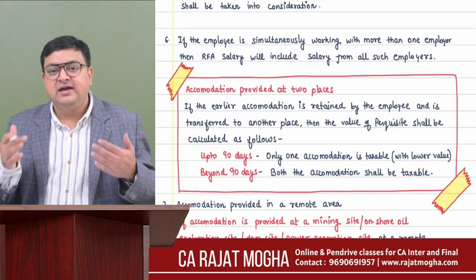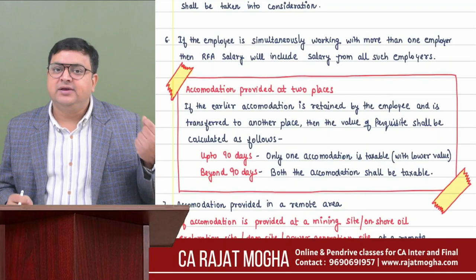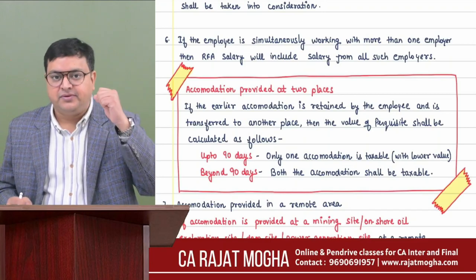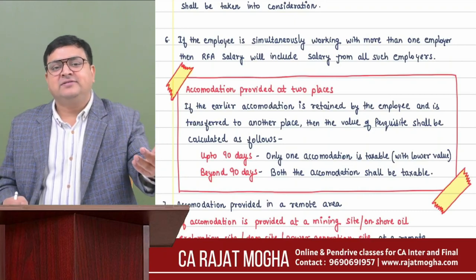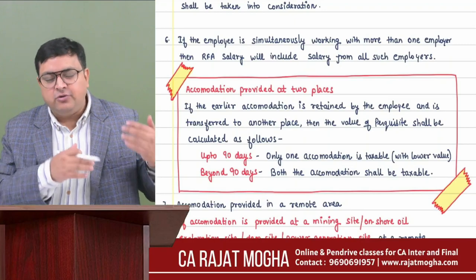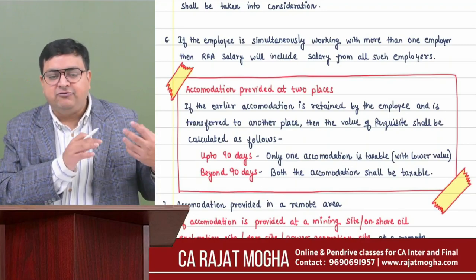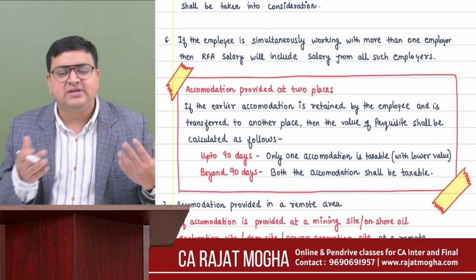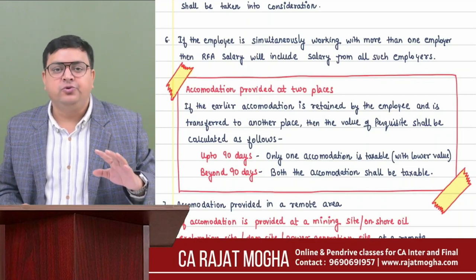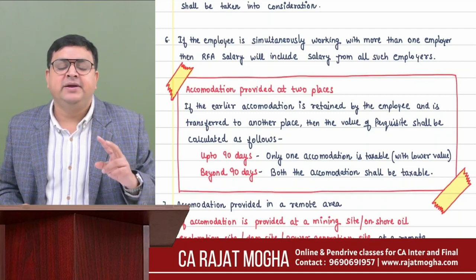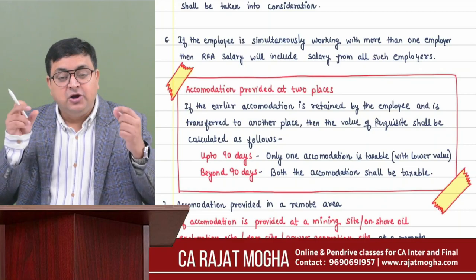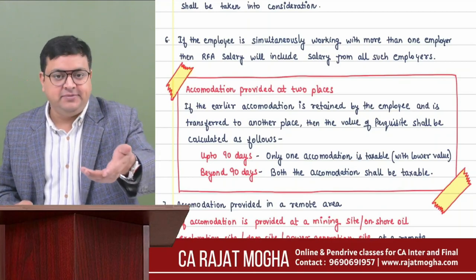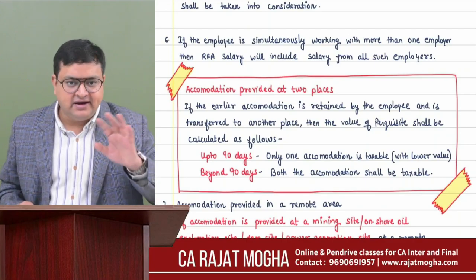If accommodation is provided at two places - say the employee was working in Bangalore and gets transferred to Thiruvananthapuram but requests to keep the Bangalore accommodation for family reasons - for the first 90 days only one accommodation (with lower value) is taxable. After 90 days, if both accommodations are still provided, both become taxable. Also, accommodation provided at a remote area (mining site, onshore site, exploration site, dam site, power generation site) is an exempt perquisite.